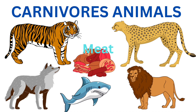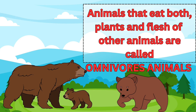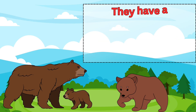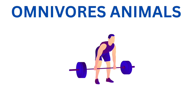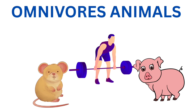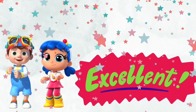Now let's know about the third animal group — omnivores. Animals that eat both plants and the flesh of other animals are called omnivore animals. They have a combination of sharp front teeth and molars for grinding. Human, pig, rat, bear, and squirrel are a few examples of omnivore animals.